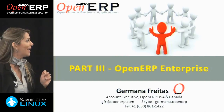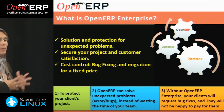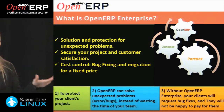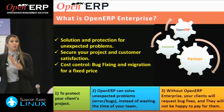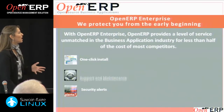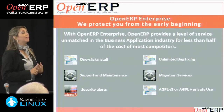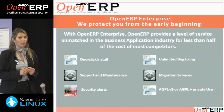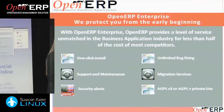Now I'm going to talk briefly about OpenERP Enterprise. OpenERP Enterprise is a solution for unexpected problems. During implementation, if you have OpenERP Enterprise, your technical people won't be spending time on small things like fixing bugs and errors — any problem you have, you just report it and OpenERP will take care of it for you. What's included: one-click install, support and maintenance, security alerts, unlimited bug fixing, migration service, access to private models, and white labeling — so you can replace the OpenERP branding with your own.